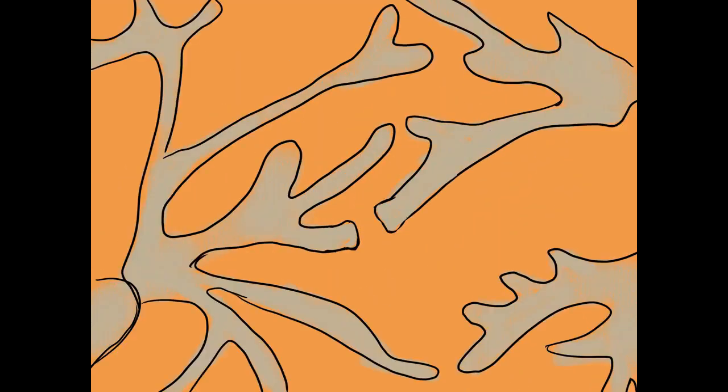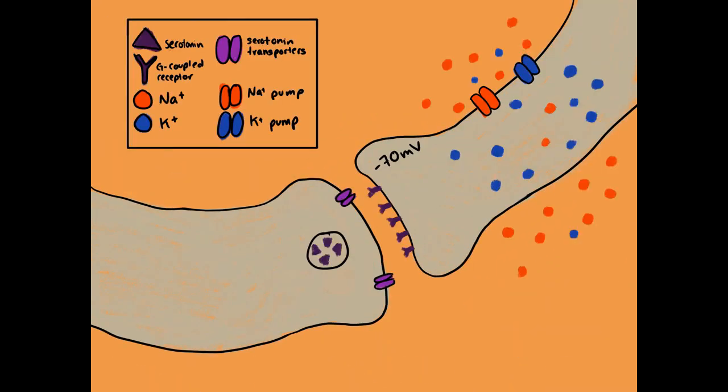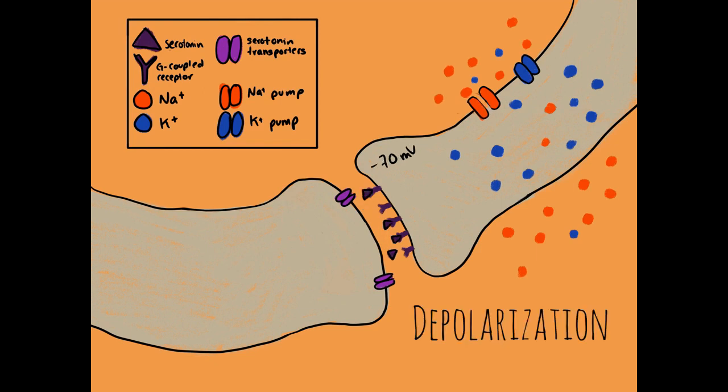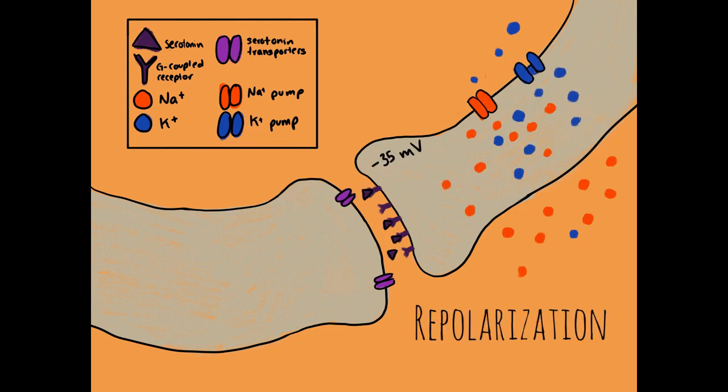When a pre-neuron releases serotonin to the synaptic cleft, the space between the two neurons, it binds to serotonin G-coupled receptors on the next neuron. This activates different G proteins, which get separated and trigger a cascade of depolarization events that pass the signal on.